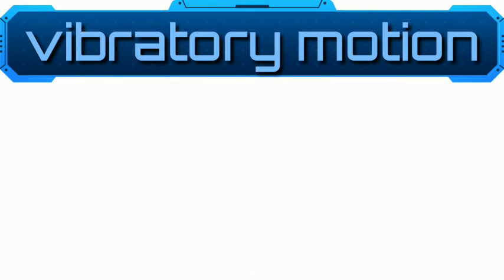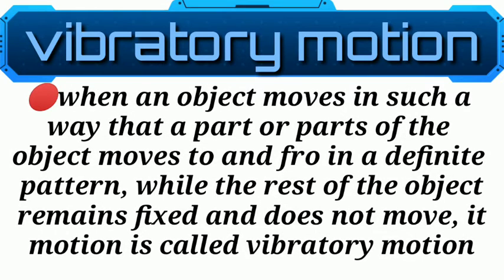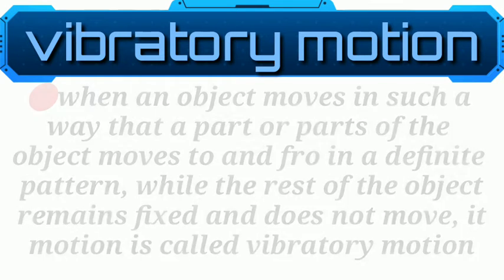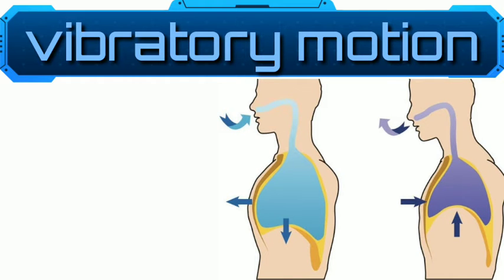Types of motion. Vibratory motion: when an object moves in such a way that a part or parts of the object move to and fro in a definite pattern while the rest of the object remains fixed and does not move, its motion is called vibratory motion. The expansion and contraction of the chest during breathing is an example of vibratory motion.